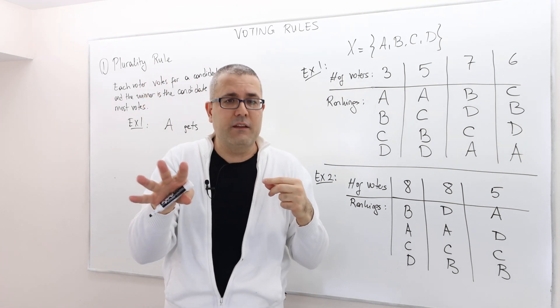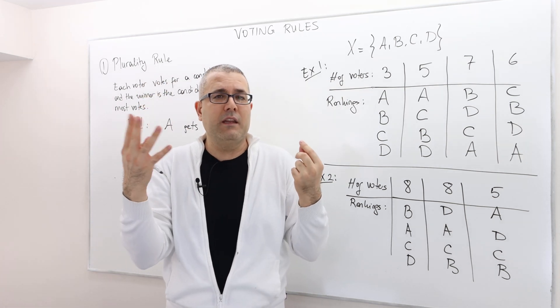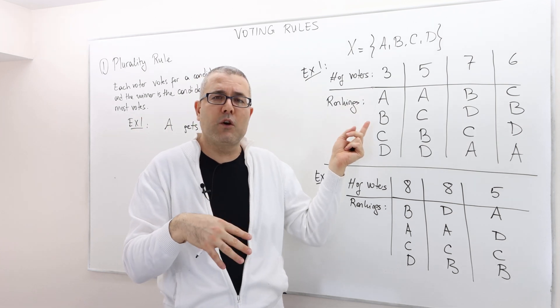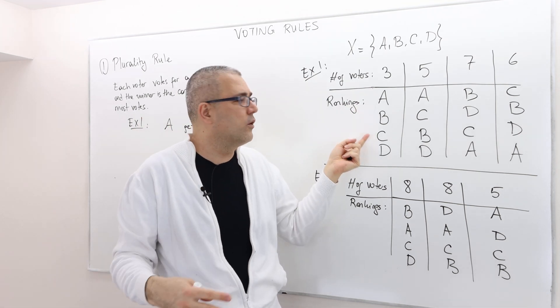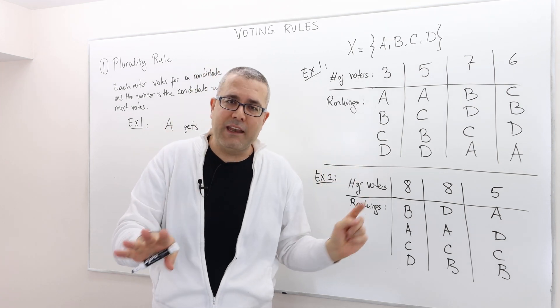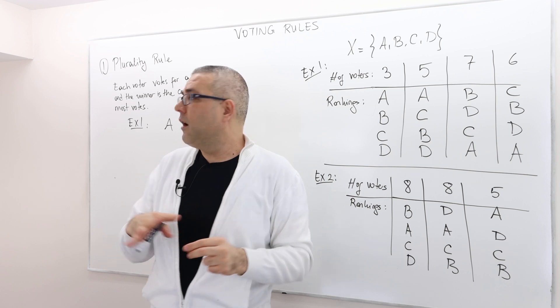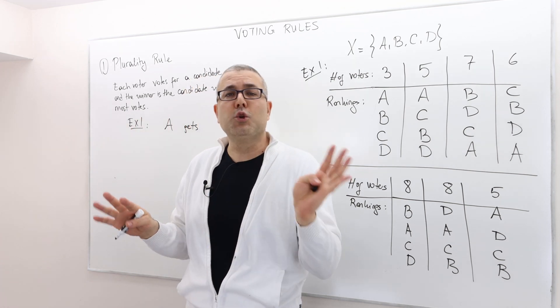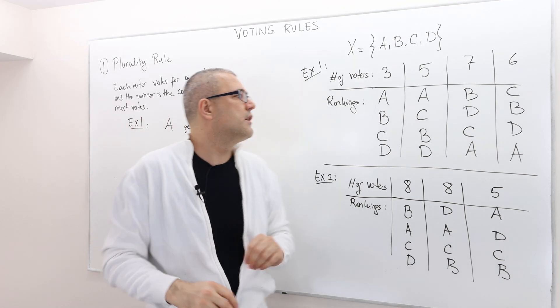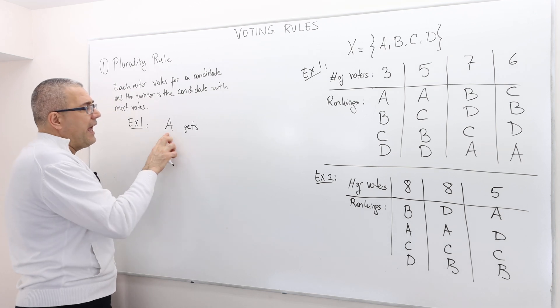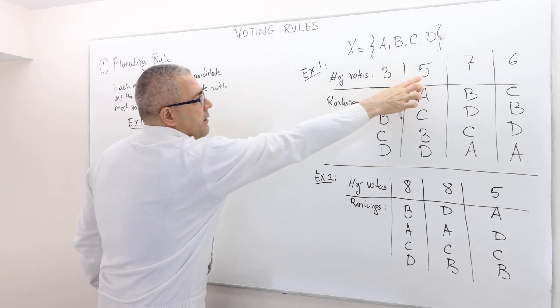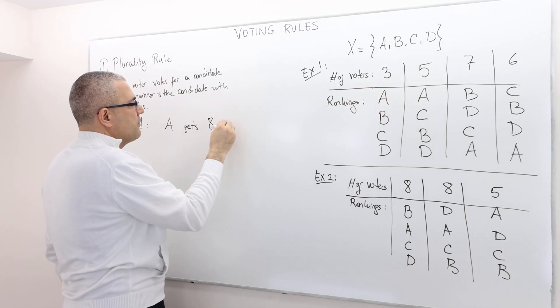You will say, oh, I mean, maybe some of those voters are going to vote strategically and then vote for B, maybe. Again, we ignore the strategic part of the voting, okay? I will talk about it towards the end of this chapter. So, A, therefore, gets three plus five, eight votes.